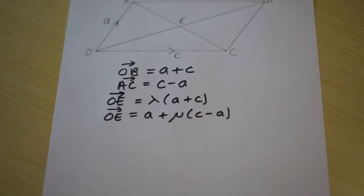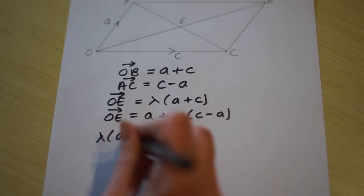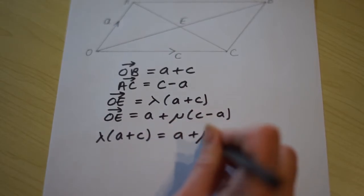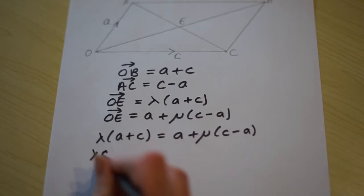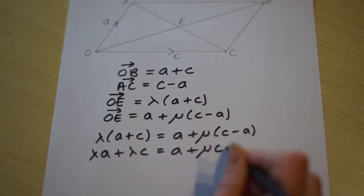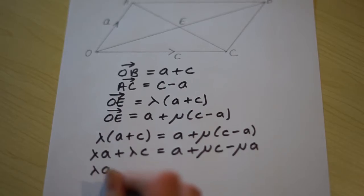So we can equate these two, these two versions of vector OE. And let's expand the brackets and group like terms. There's a tiny bit to do on the right hand side.